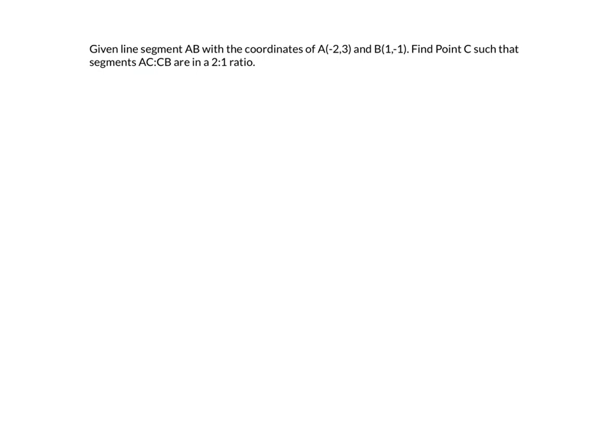Let's try a second example. Given line segment AB with the coordinates of A at (-2, 3) and B at (1, -1), find point C so that AC and CB are in a 2 to 1 ratio. The ratio doesn't have to have a 1 — it could be 2 to 3 or 2 to 7; whatever it is, you still add those two numbers up. If you want, pause the video and give it a try — either with or without the formula — and then I'll show you both.